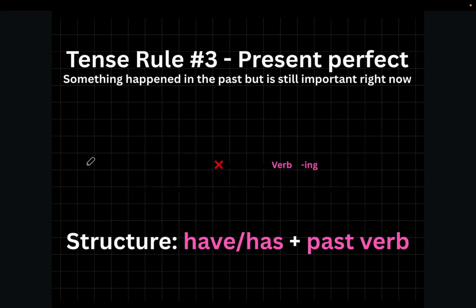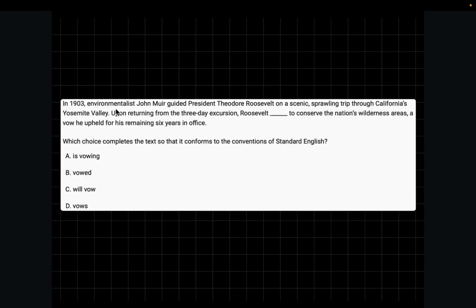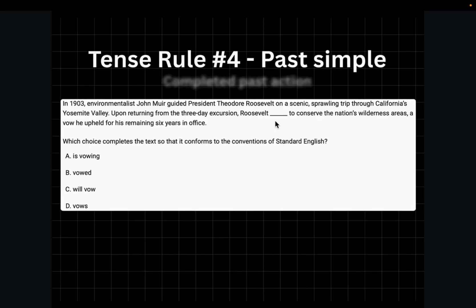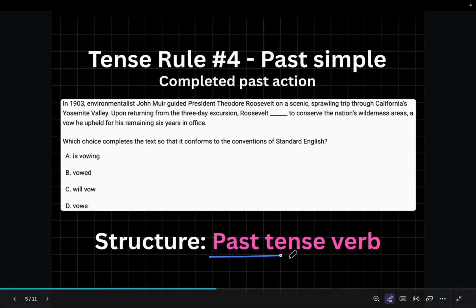Here's another question, which uses the shortest tense and one of the most common tenses. In 1903, environmentalist John Muir guided President Theodore Roosevelt on a scenic sprawling trip through California's Yosemite Valley. Upon returning from the three-day excursion, Roosevelt blank to conserve the nation's wilderness areas, a vow he held up for his remaining six years in office. Okay, so we can see that over here, there is a completed past action. And whenever there is a complete past action, we use tense rule number four, which is past simple. And again, we said past simple is used for complete past actions.